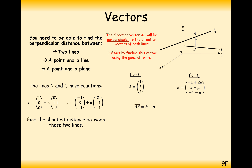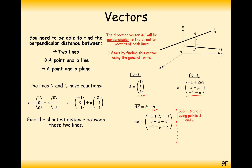So how do we work out the shortest distance from line 1 to line 2? We do the subtraction between the two vectors, keeping λ and μ in both. We need to find the values for λ and μ that minimise the distance from A to B by making right angles with line 1 and line 2. Subtracting and simplifying gives the vector A to B as (-2 + 2μ, 3 - μ - λ, -1 - μ - λ).